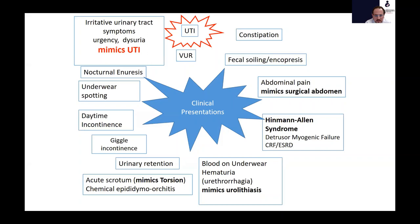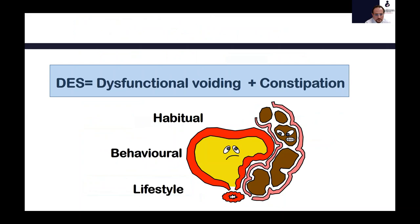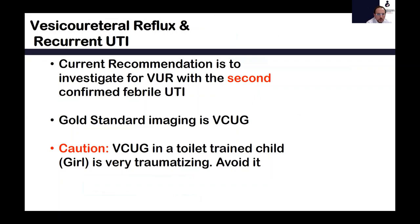Dysfunctional elimination syndrome leads to many clinical presentations. We are talking about UTIs, but it can also mimic UTIs — children come with dysuria and irritative urinary symptoms without a truly positive culture. They can also have true recurrent UTIs, nocturnal enuresis, secondary reflux, incontinence, retention, testicular pain, fecal soiling, bladder failure, and blood in the urine. Dysfunctional voiding and constipation is behavioral, can become a lifestyle, and requires tremendous effort to reverse through lifestyle modification.